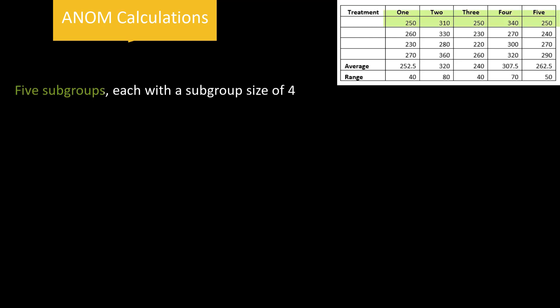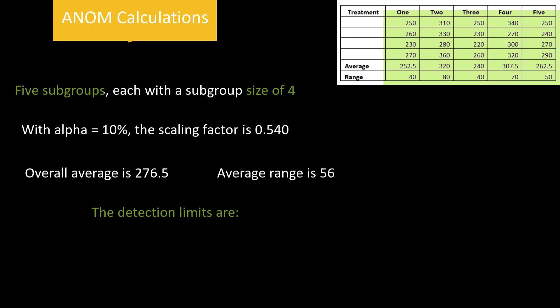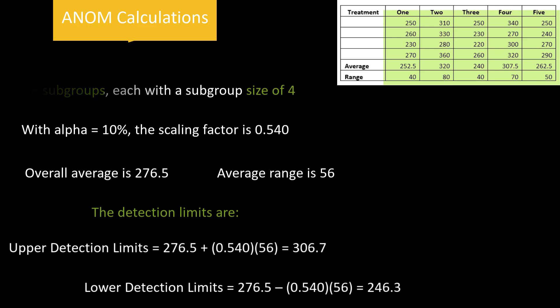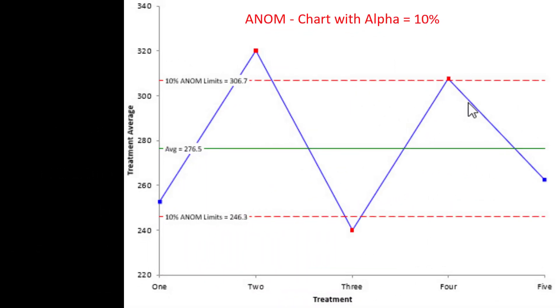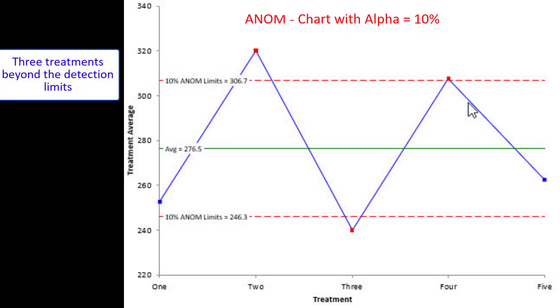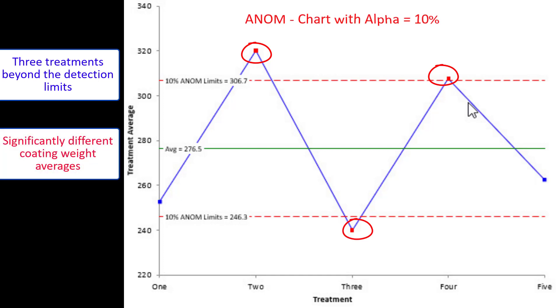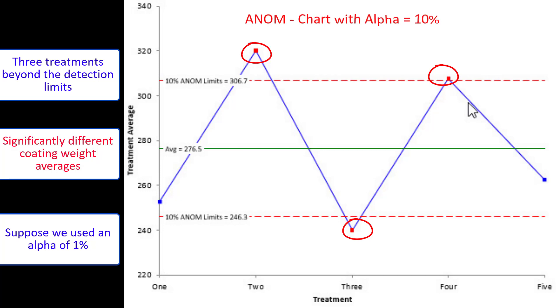Let's show you how our calculations work here. You have 5 subgroups, each with a subgroup size of 4. Each treatment has 4 underneath it. And we've calculated the average and the range. With alpha equal to 10 percent, the scaling factor is 0.54. Our overall average, 276.5. Our average range is 56. The detection limits are that overall average plus or minus the scaling factor times the average range. They go from 306 down to 246. So you plot your data, plot your average, plot your detection limits. And you see in this case, there are three treatments beyond the detection limits. Treatment two, treatment three, and treatment four. That means these are significantly different coding weight averages.